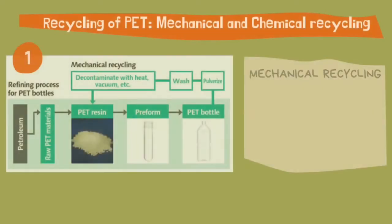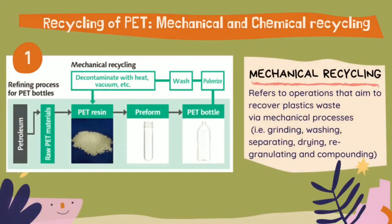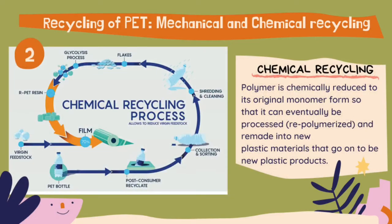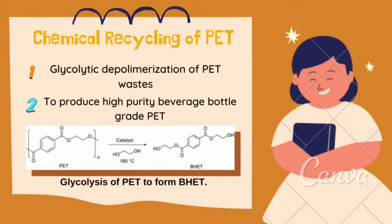Mechanical recycling preserves the molecular structure by mechanically crushing the plastic and remelting it into granulate, which is then used to make new plastic products. Recently, chemical recycling of PET has been investigated as an innovative solution to the treatment of post-consumer PET. Depolymerization is an example of chemical recycling; glycolytic depolymerization of PET waste is a process to produce high-value bis-2-hydroxyethylene terephthalate (BHET) monomer using ethylene glycol.